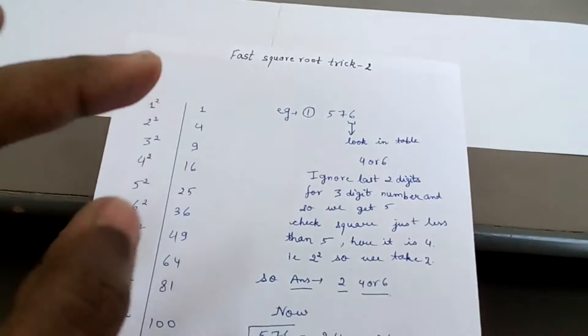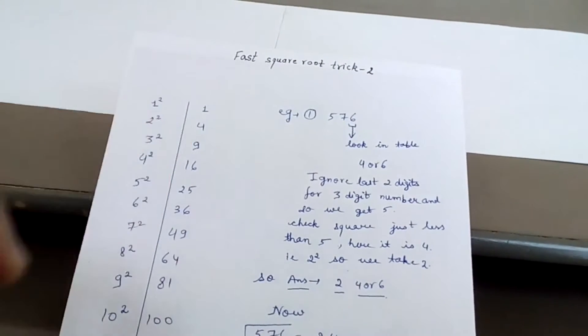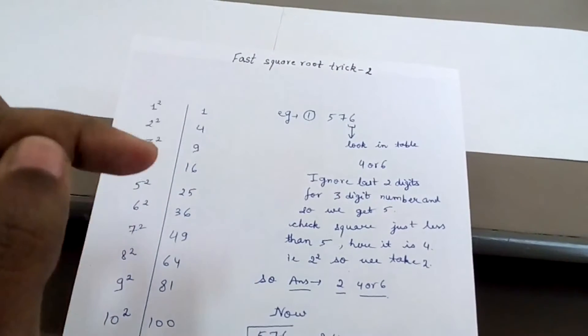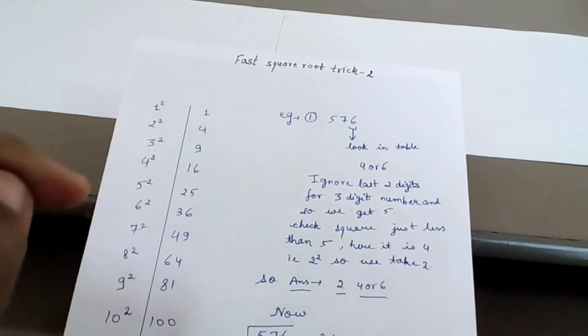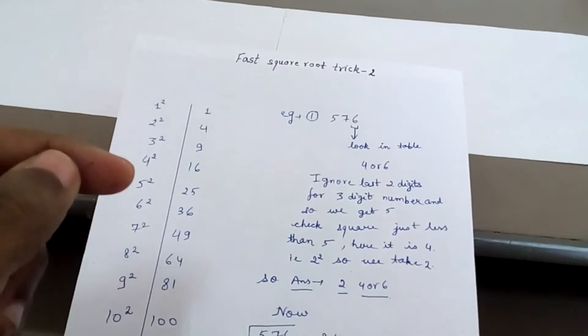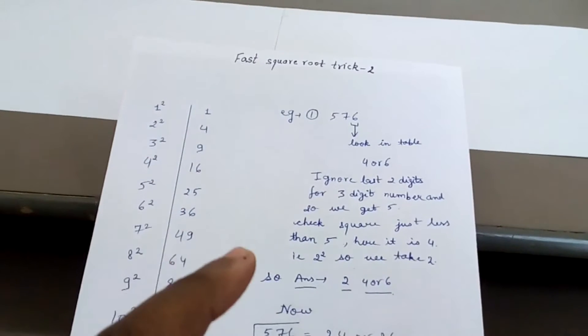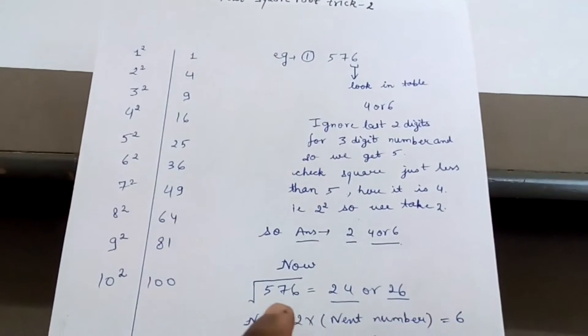Now you have to take just below 5 the square. Here just below 5 is 4. So our corresponding square root will be 2. So final answer of square root of 576 will be 24 or 26.